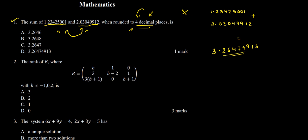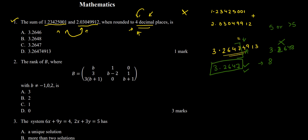Now we round this result to four decimal places. Four decimal places gives us 3.2647. We check the fifth decimal place, which is 4. Since 4 is less than 5, we do not round up. If it had been 5 or more, the fourth decimal place 7 would become 8, giving 3.2648. But since it is 4, our answer is 3.2647, which is option C.